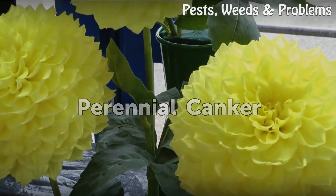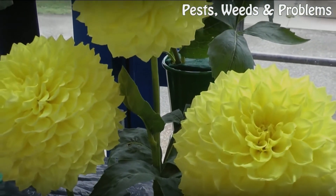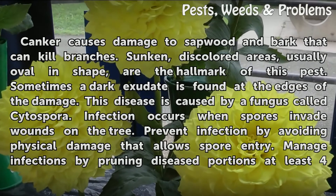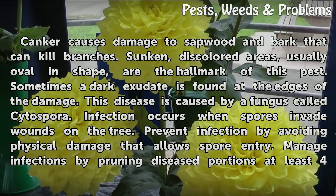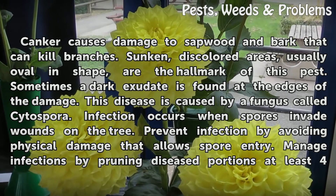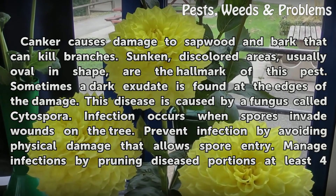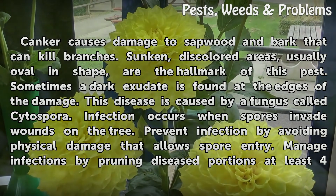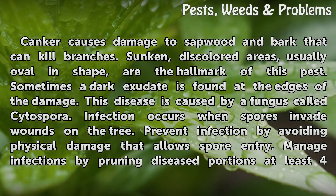Perennial Canker. Canker causes damage to sapwood and bark that can kill branches. Sunken, discolored areas, usually oval in shape, are the hallmark of this pest. Sometimes a dark exudate is found at the edges of the damage. This disease is caused by a fungus called Cytospora.